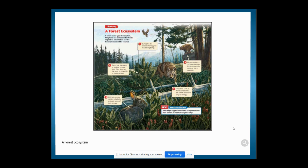Number 1: Sunlight is a source of energy for most living things. Number 2: Plants use the energy in sunlight to make food. They serve as the basis for other life in the ecosystem.